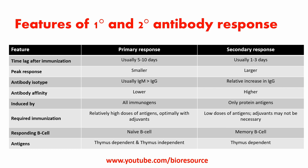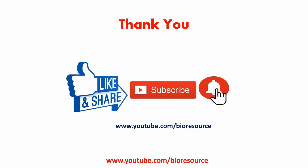The primary response is induced by all immunogens, but the secondary response is induced only by protein antigens. Relatively high doses of antigen may be required for primary immunization, whereas low doses are sufficient for the secondary response. The responding B cells in the primary response are naive B cells, whereas in the secondary response they are memory B cells. The antigens can be thymus-dependent or thymus-independent, but the secondary response is thymus-dependent.